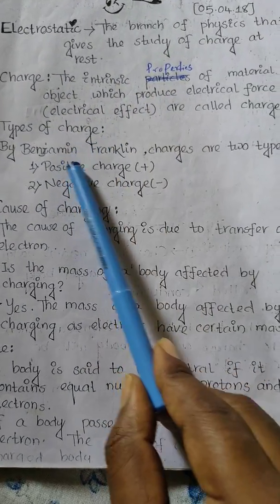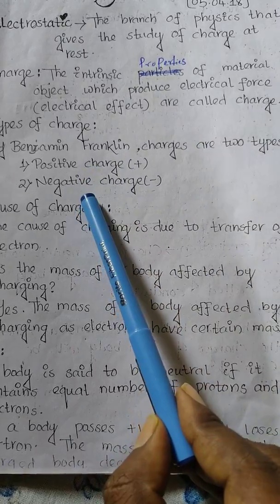According to Benjamin Franklin, there are two types of charges: positive charge and negative charge.